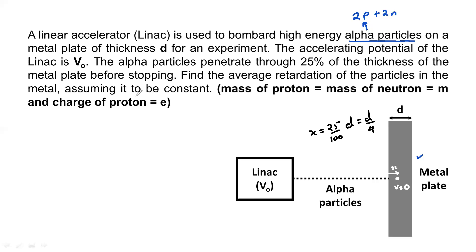We need to find the average retardation of the particles in the metal, assuming it to be constant. When acceleration or retardation is constant, the three equations of motion apply. Looking at the situation, the final velocity is zero, the distance traveled is known, and we can find the velocity with which the particle hits the plate.